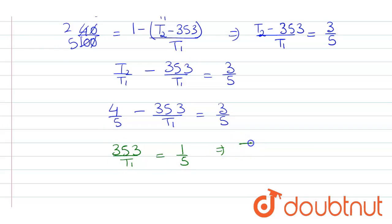That means T1 will be equal to 353 into 5. So it comes out to be 1765 Kelvin.